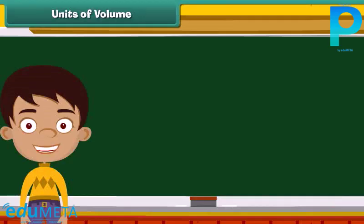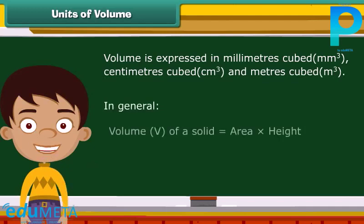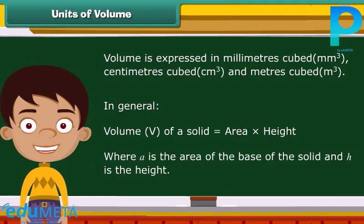Basically, volume is expressed in millimeters cubed, centimeters cubed and meters cubed. In general, the volume of a solid is given by area of the base times height, where A is the area of the base of the solid and H is the height. Let's learn about the volumes of different objects.